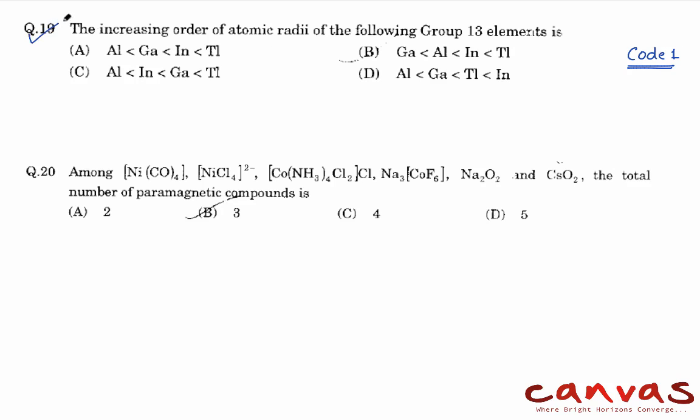The first question: the increasing order of atomic radii of the following group 13 elements. Now the main point about group 13 elements is when we are going down from aluminium to gallium, because of the poor shielding of d orbitals, there is an unexpected result in the atomic radii and the ionization energy.